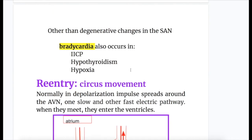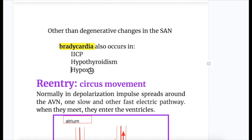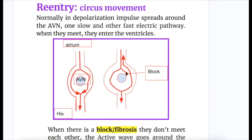Other than degenerative changes in the sinoatrial node, bradycardia also occurs in increased intracranial pressure, hypothyroidism, and hypoxia.